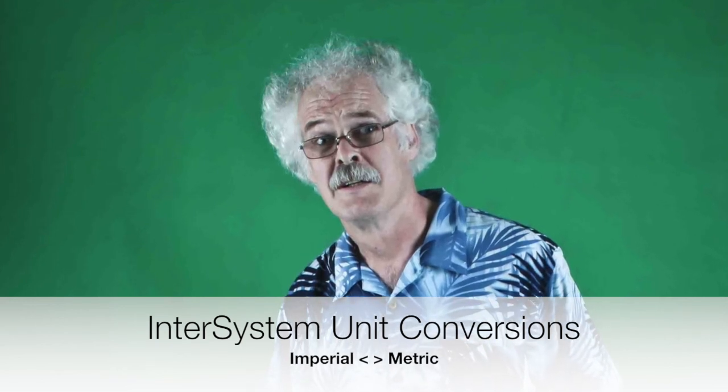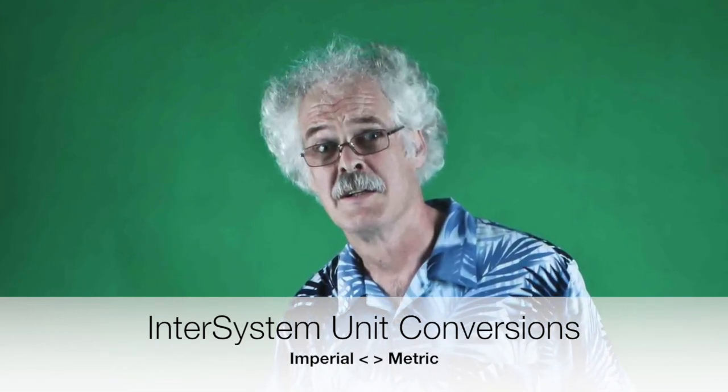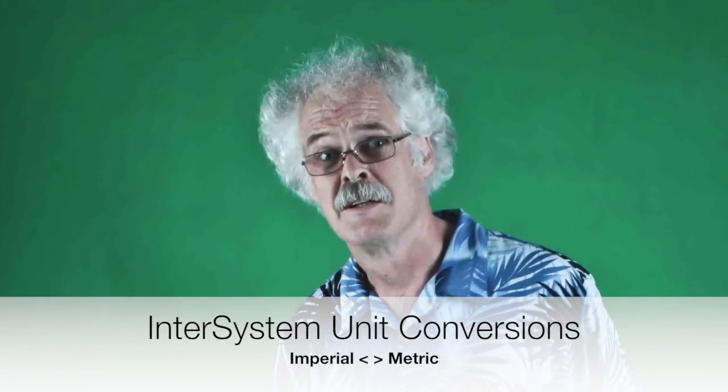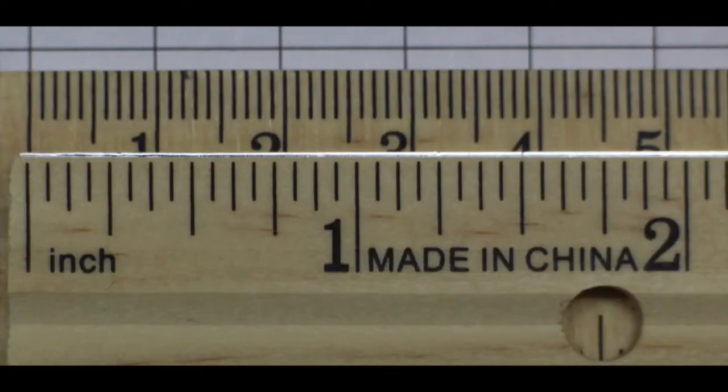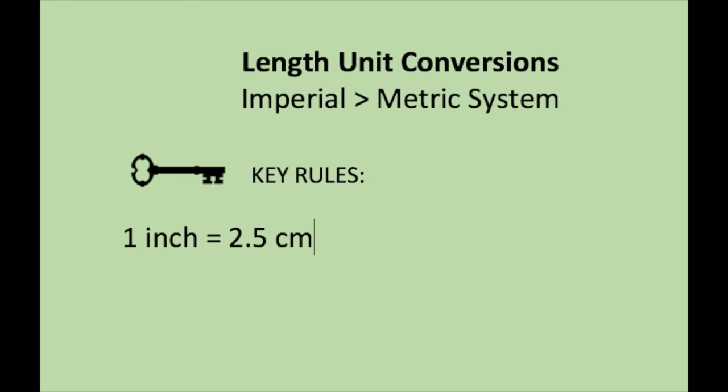We now go to inter-system conversions, from imperial to metric or from metric to imperial. We first have to set up the rules or the keys to solve such problems. One inch is how many centimeters. If you put two rulers side by side, one with the imperial side and the other with the metric side, we'll see that one inch is a little more than two and a half centimeters.